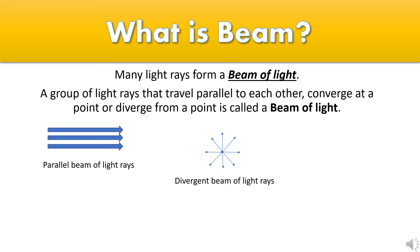What is a beam of light? Many light rays together form a beam of light. When a group of light rays travel parallel to each other, or converge at a point, or diverge from a point, it is called a beam of light. You can refer to the pictures given below.